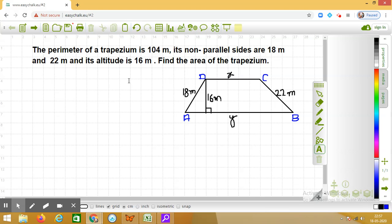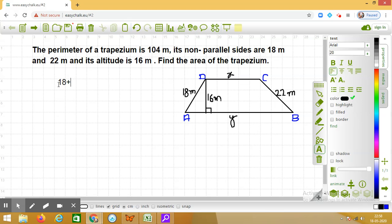We are going to use the formula for perimeter of the trapezium. You know that perimeter is sum of all the sides. I am writing the equation: 18 plus Y plus 22 plus X equals 104. It is given that perimeter is 104 meters.